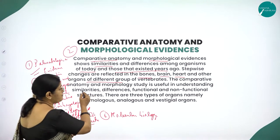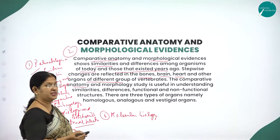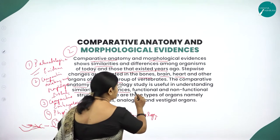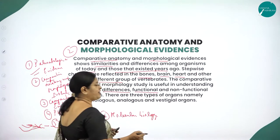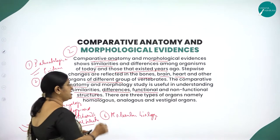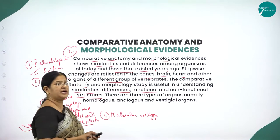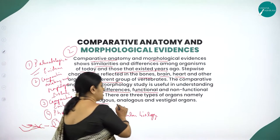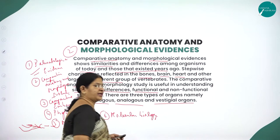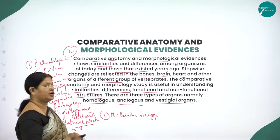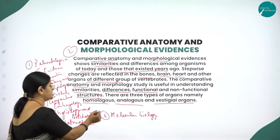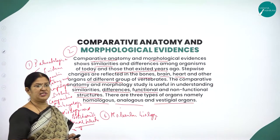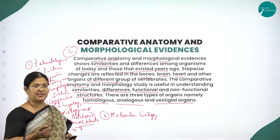Comparative anatomy and morphological study is useful for understanding similarities, differences, and functional and non-functional structures. There are three types of organs, namely homologous organs, analogous organs and vestigial organs.